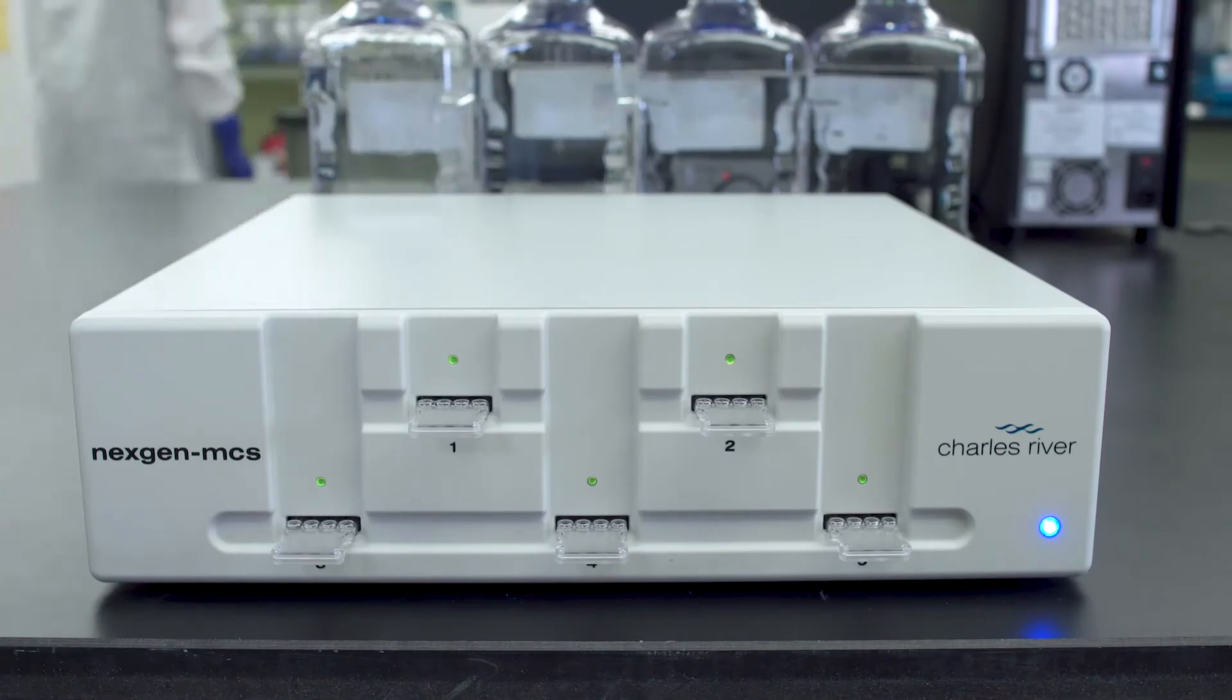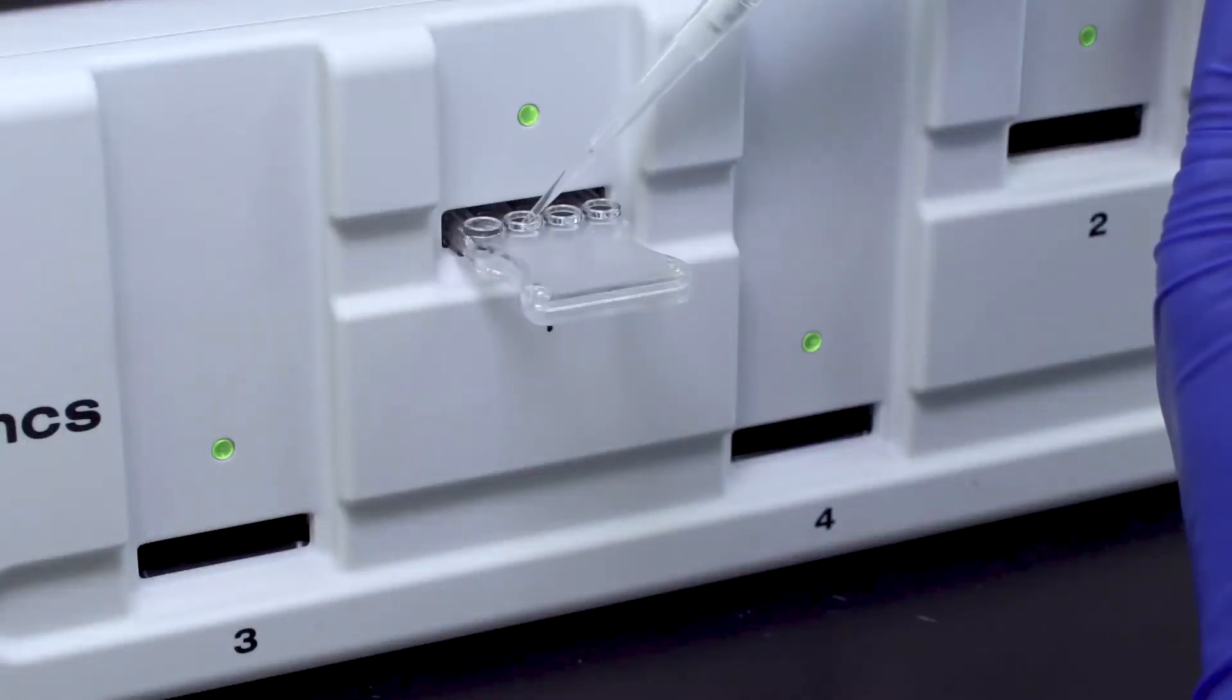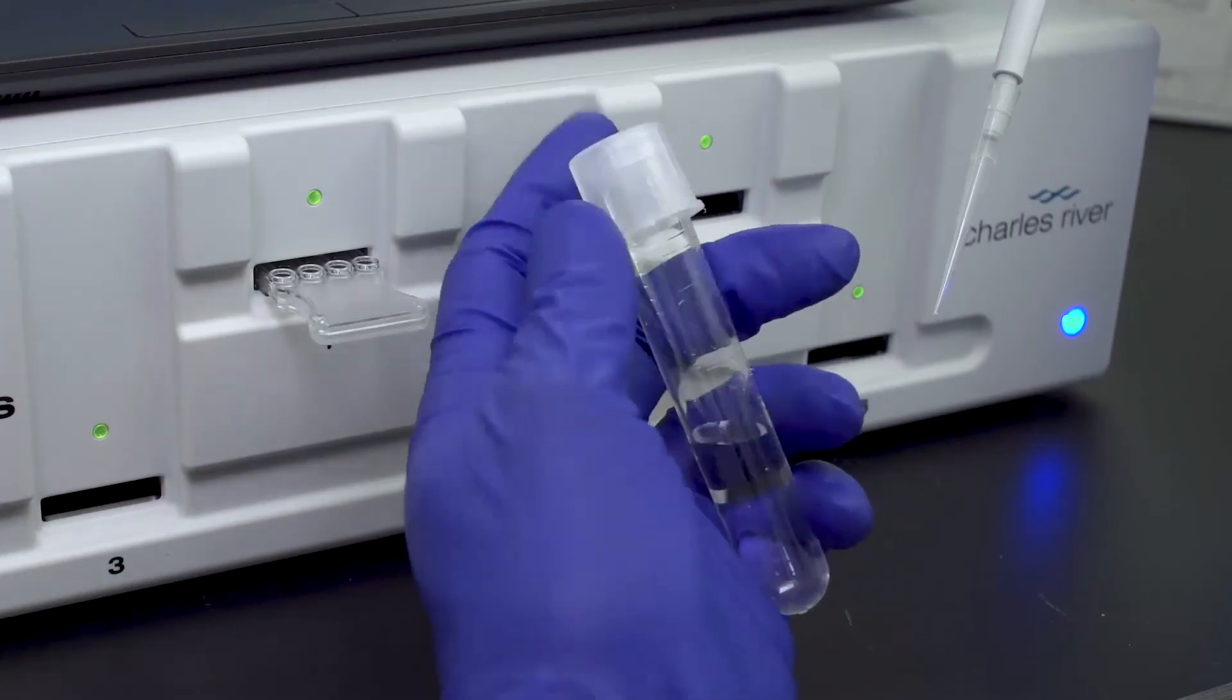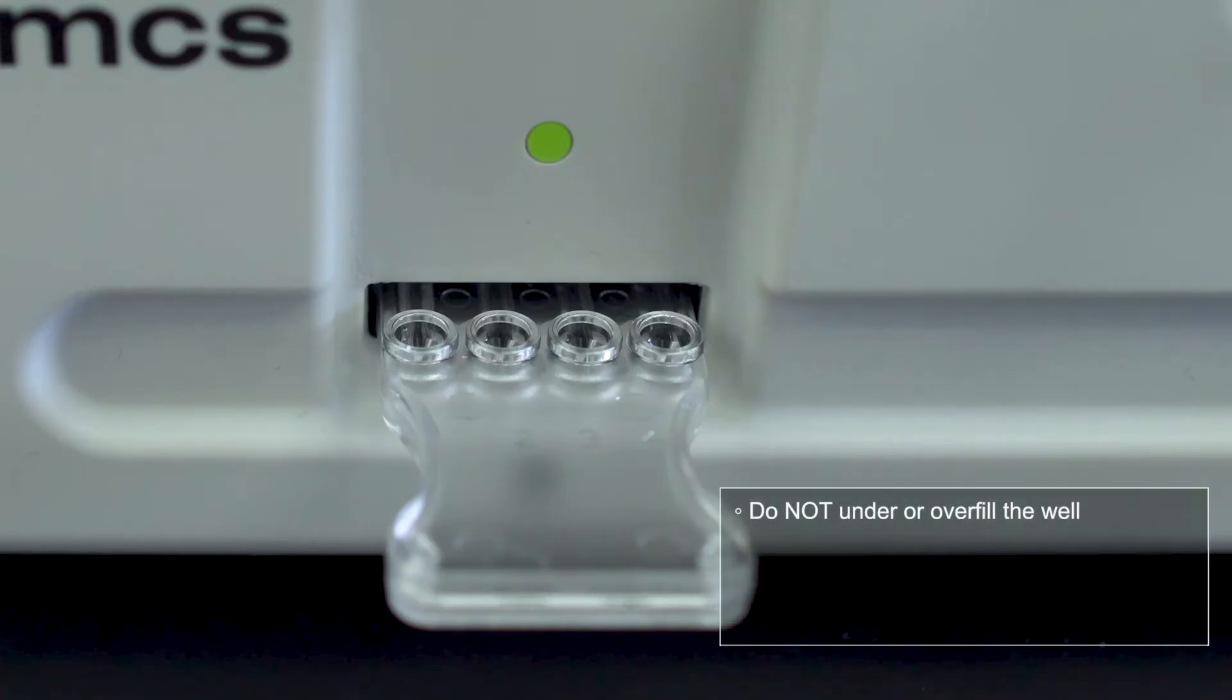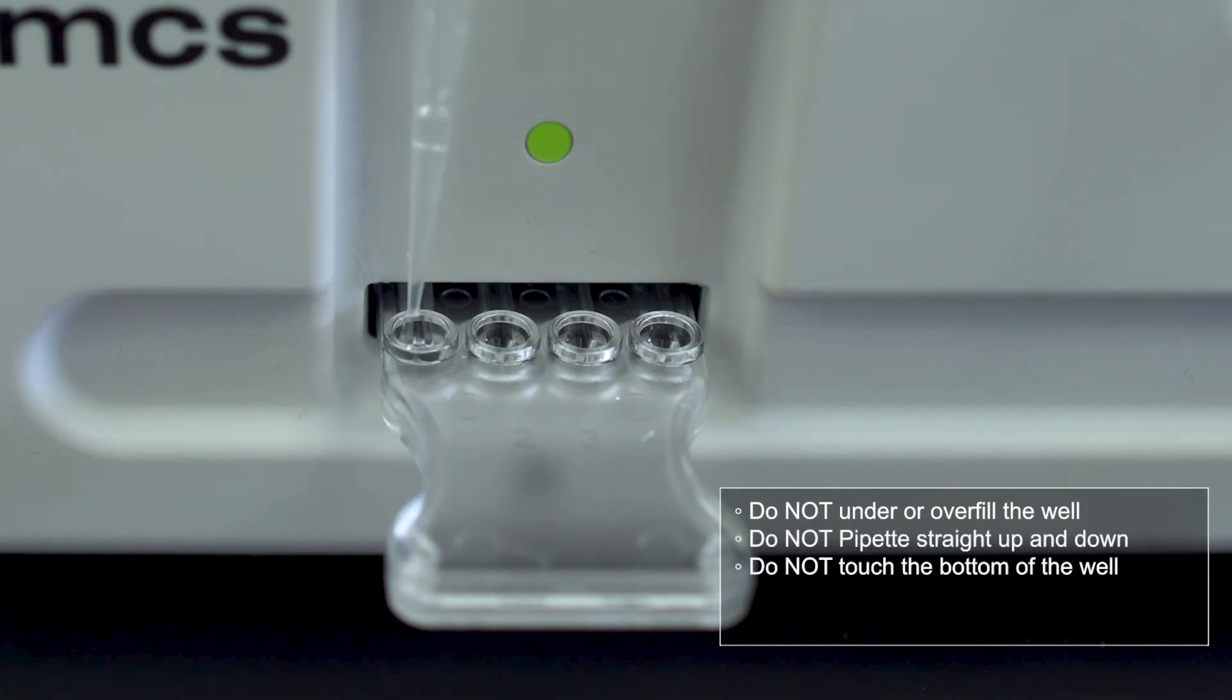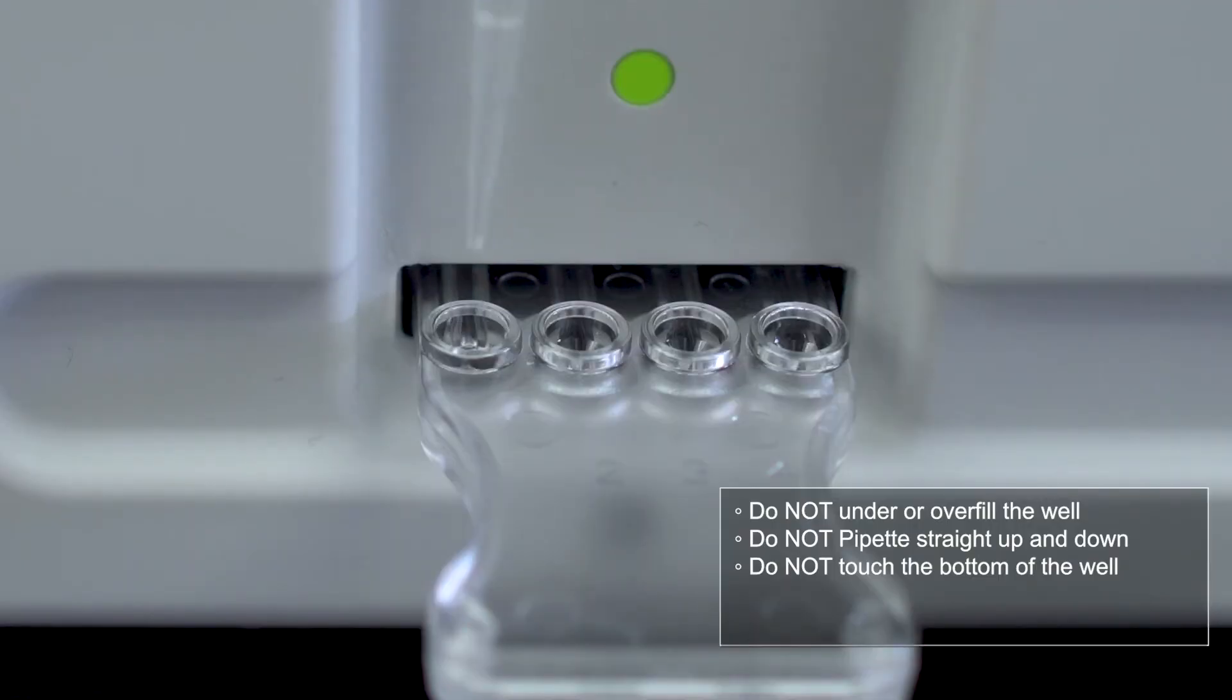For reliable results, it is important that you pipette the sample correctly. You need exactly 25 micro-liters of sample before the test is started. Do not under or overfill the well and do not pipette straight up and down, touching the bottom of the well. Also, be careful not to create bubbles when adding the sample.